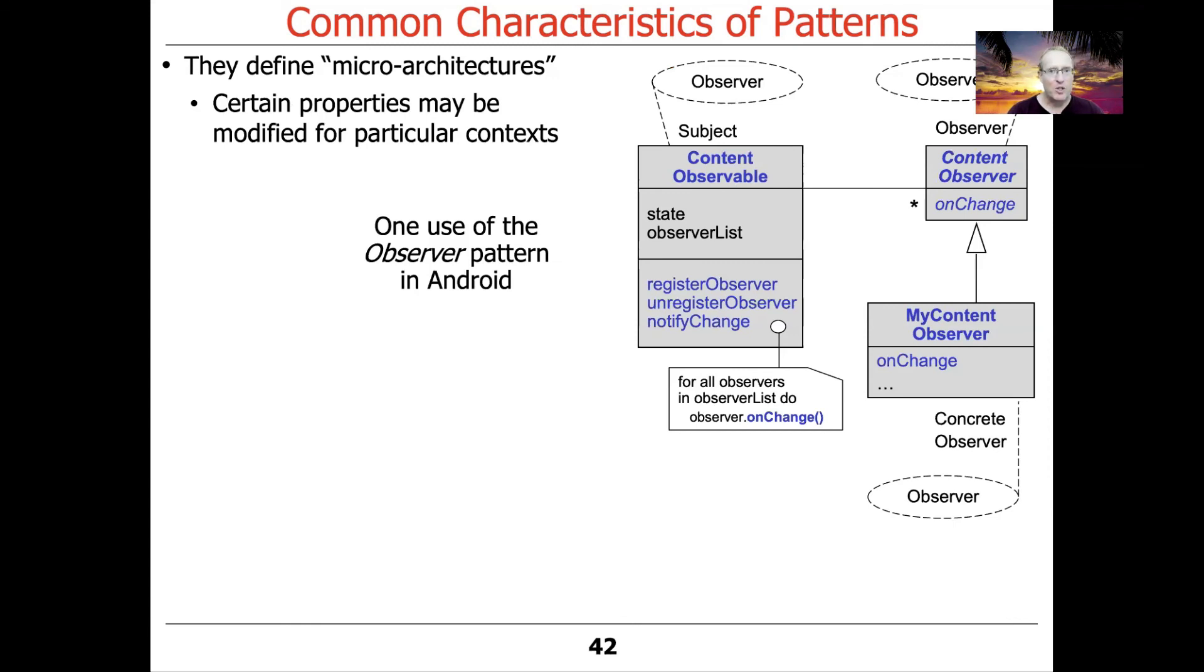Certain properties can be modified for particular contexts. Here's an example use of the observer pattern in the Android platform. If you've programmed with Android, you're familiar with the concept of something called a content observer. You can essentially have observers that are registered to get notified when content changes in something like a content provider. If you take a look here, you can see the class diagram that corresponds to mapping the elements in the content observer from Android back onto the observer pattern.